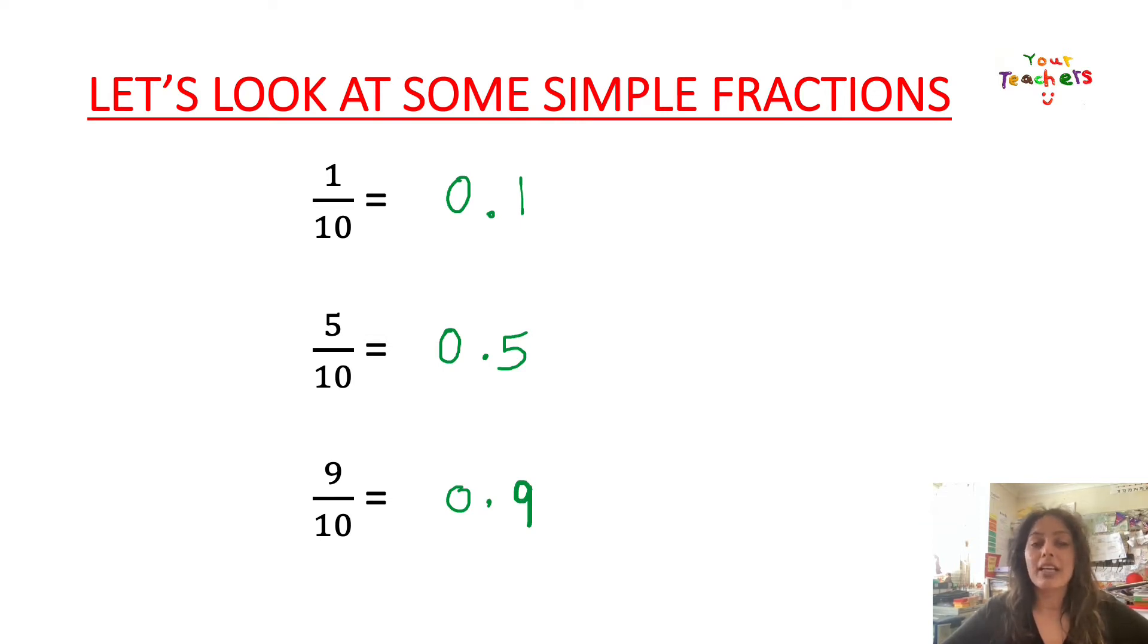There are two digits. Let's have a look at 5 tenths, 0.5. We've got two spaces there for two digits, a 0 and a 5. And for 9 tenths, we have got space for a 0 and a 9.